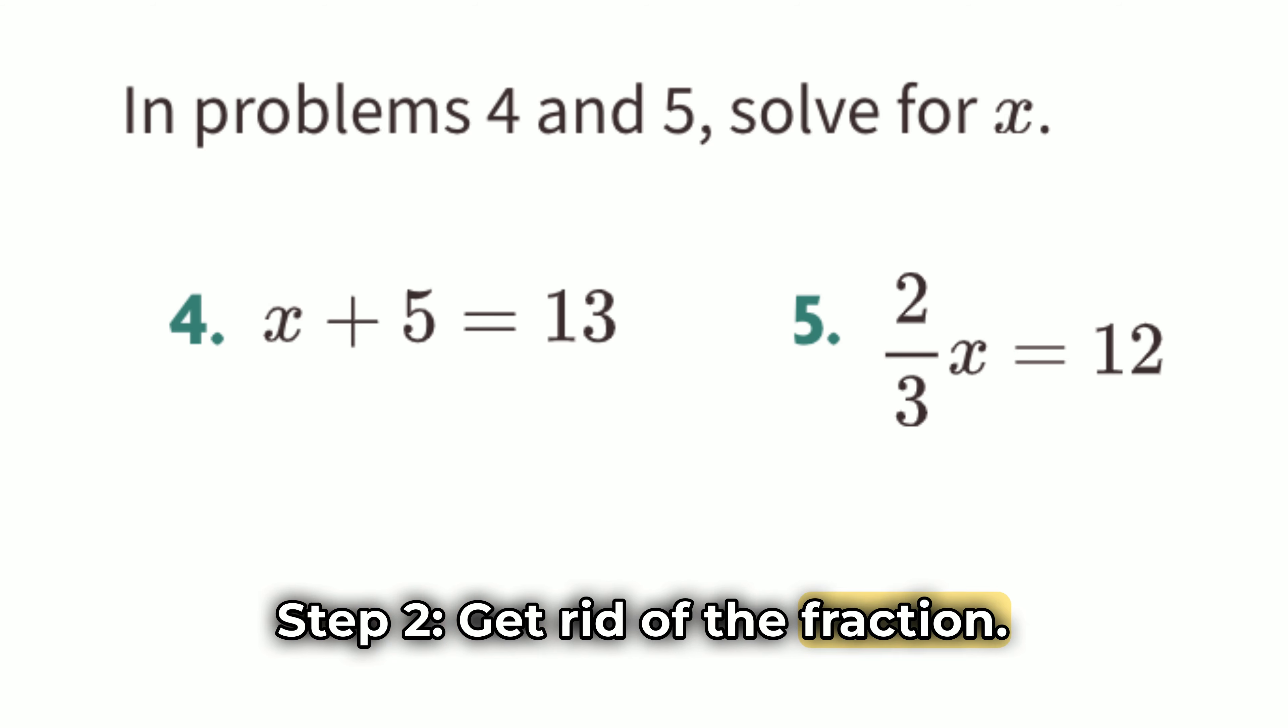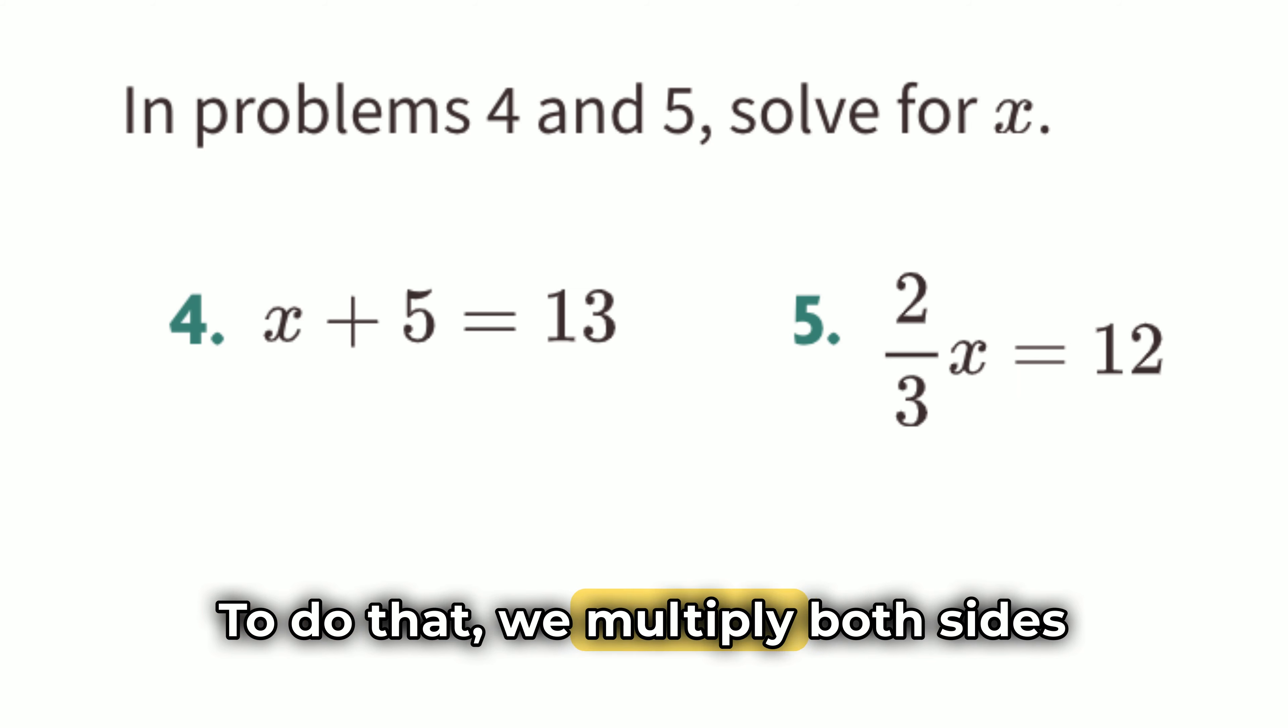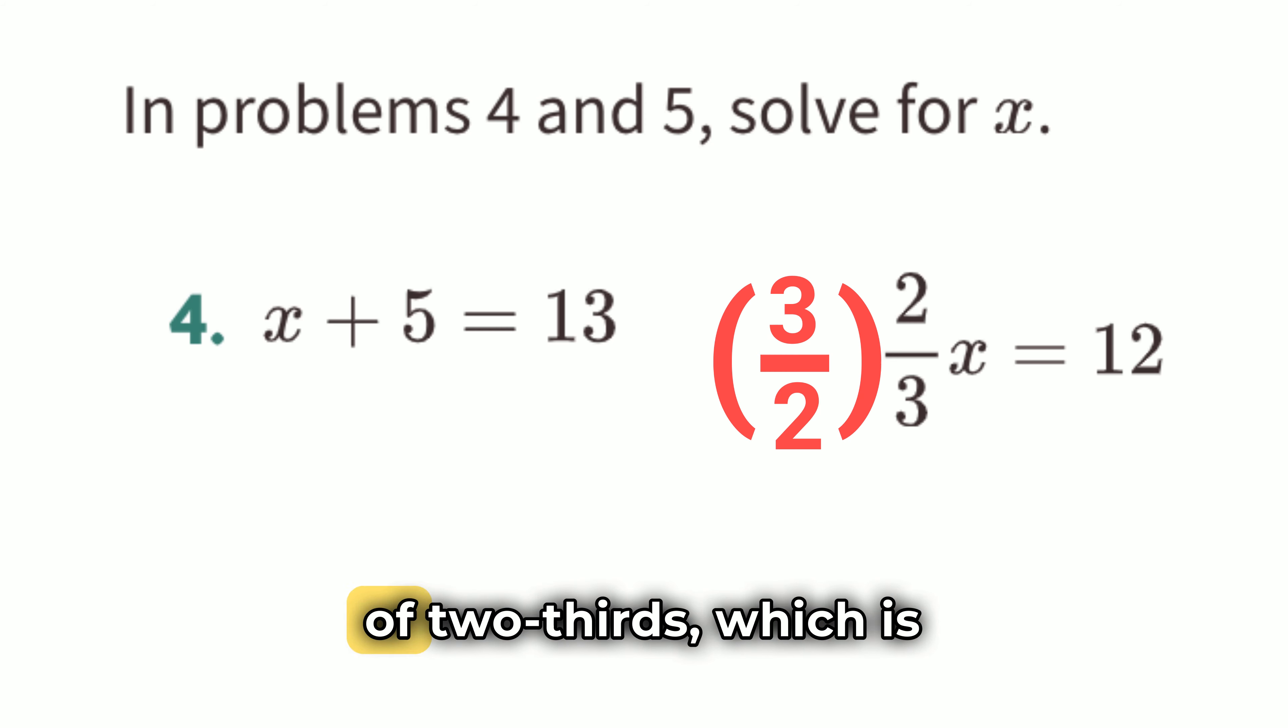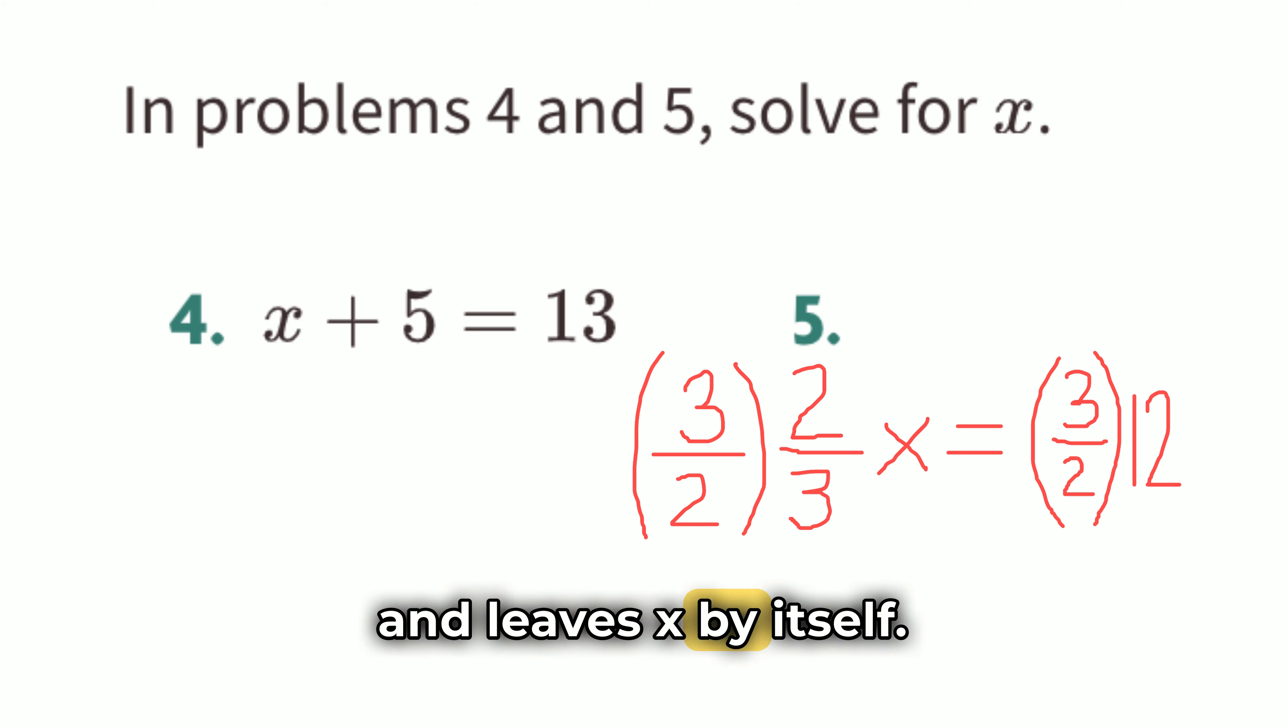Step 2. Get rid of the fraction. To make things easier, we want to get rid of the fraction 2 thirds in front of x. To do that, we multiply both sides of the equation by the reciprocal of 2 thirds, which is 3 over 2, or 3 halves. This cancels out the fraction on the left side and leaves x by itself. Multiply both sides by 3 halves. 3 halves times 2 thirds x equals 3 halves times 12.